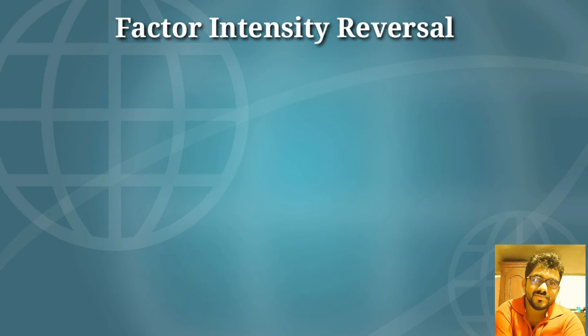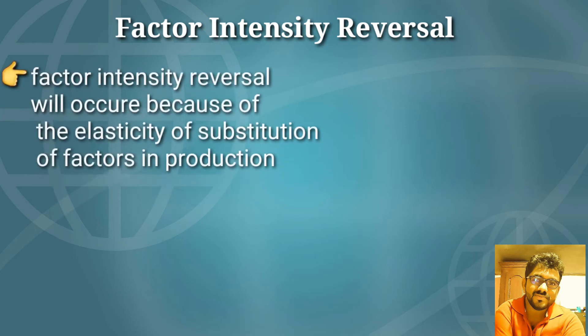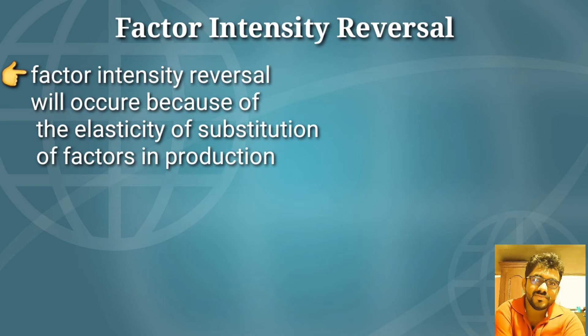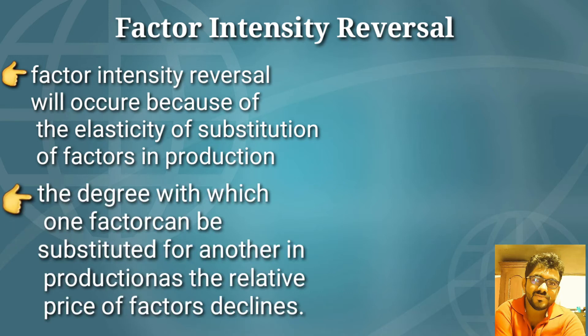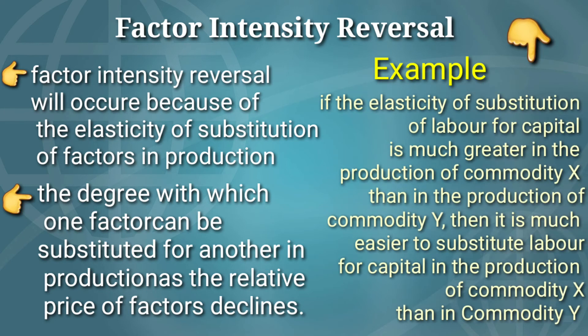To understand when and why factor intensity reversal occurs, we will use the concept of elasticity of substitution over factors in production. The elasticity of substitution measures the degree to which one factor can be substituted for another in production as the relative price of a factor declines. For example, suppose the elasticity of substitution of labor and capital is much greater in the production of commodity X than in the production of commodity Y. This means it is much easier to substitute labor for capital, or vice versa, in the production of X than in Y.